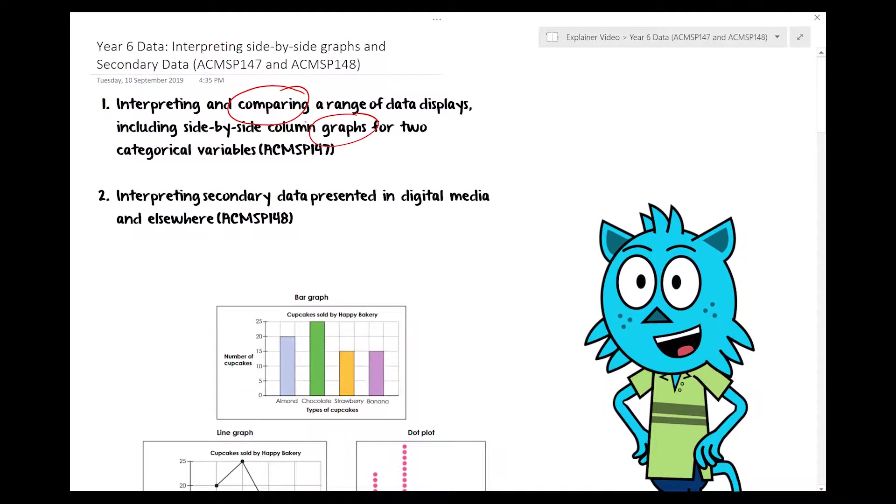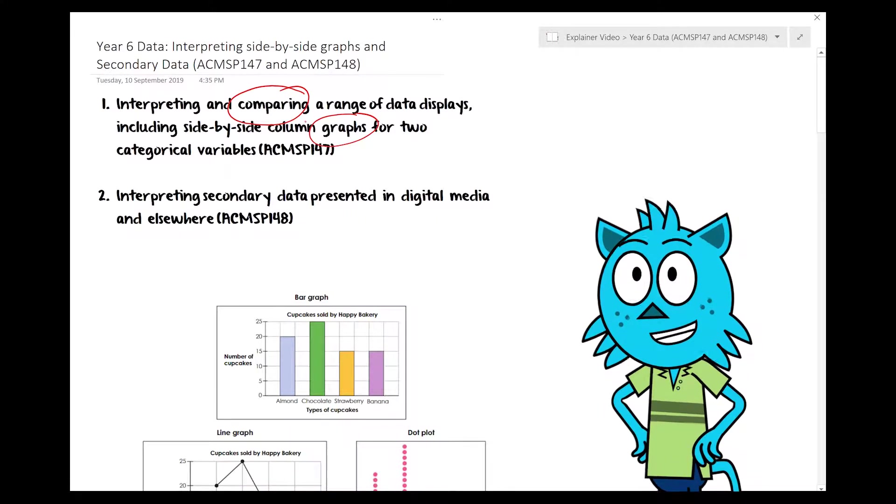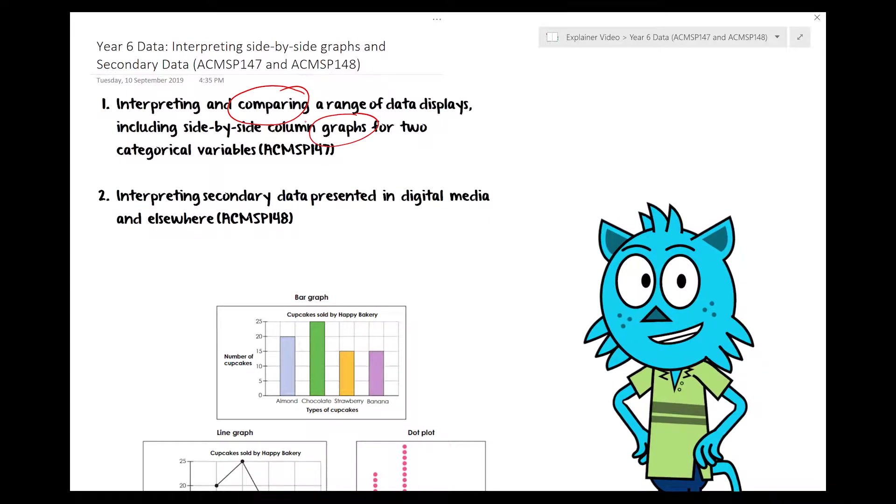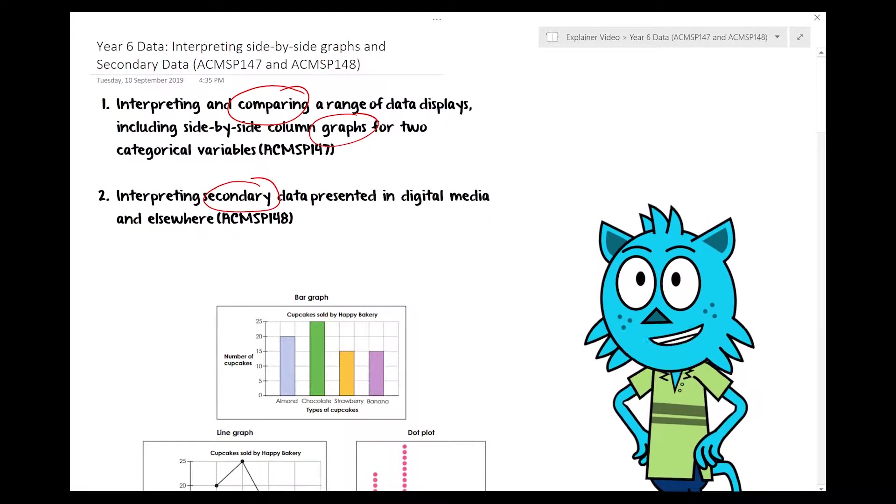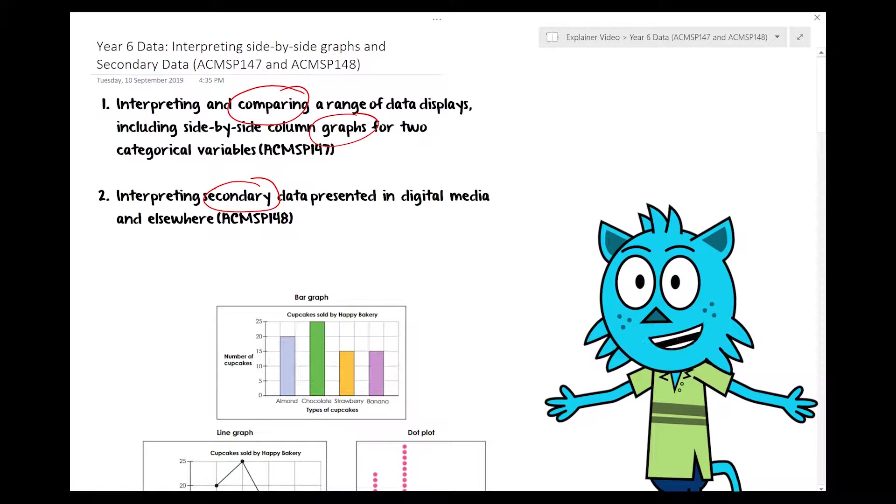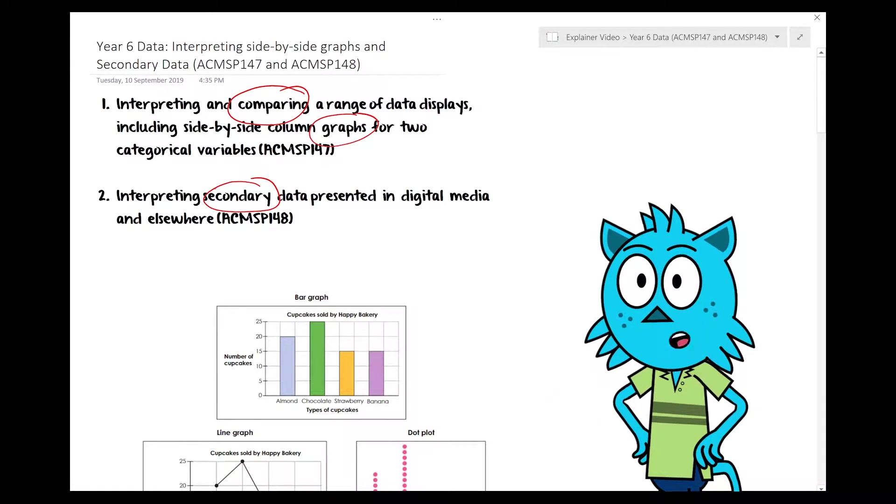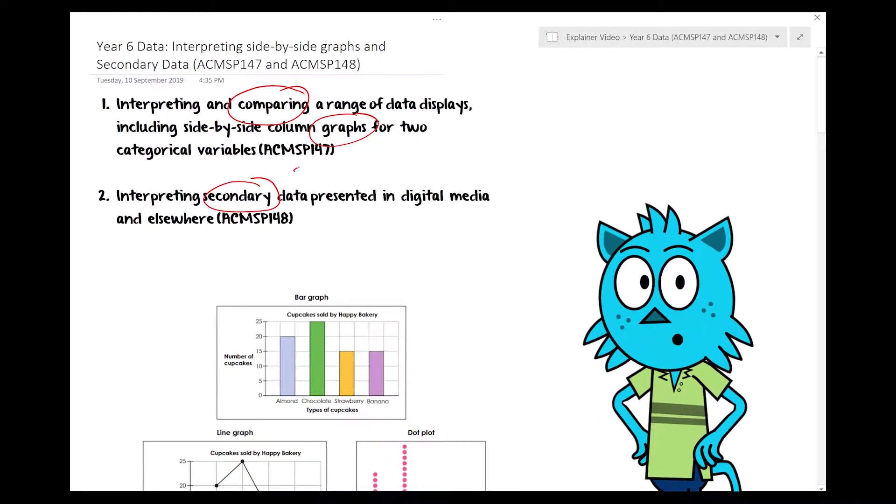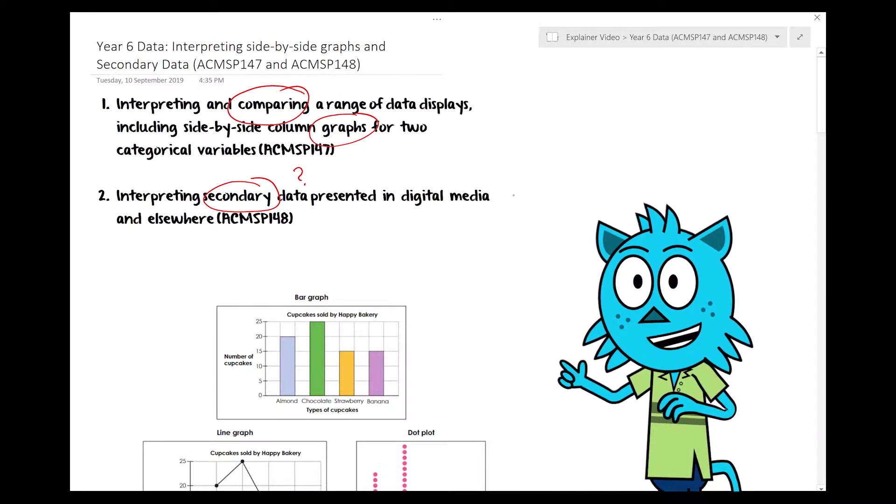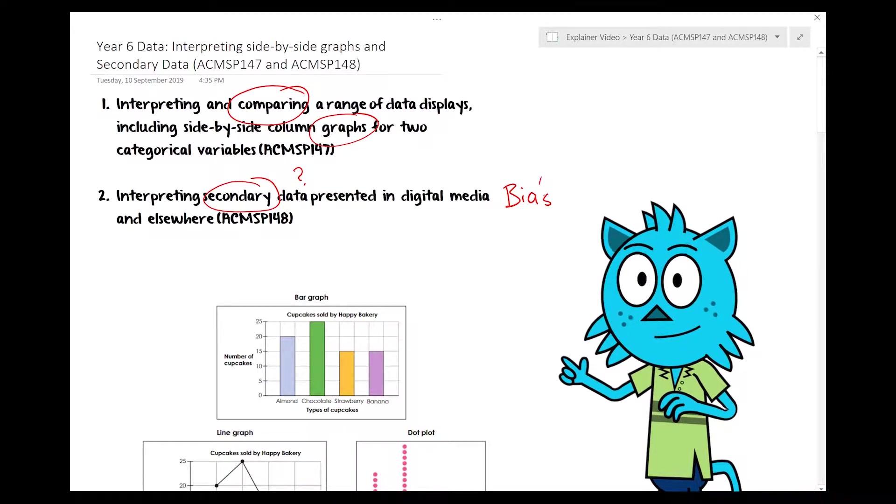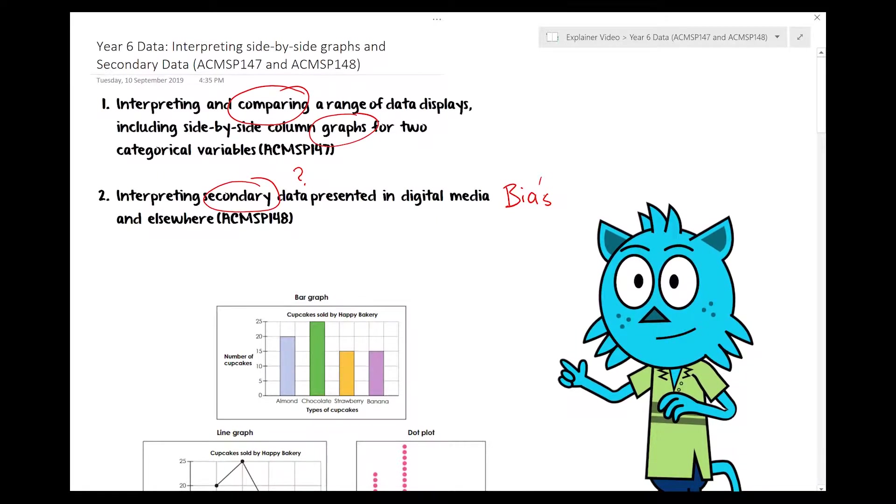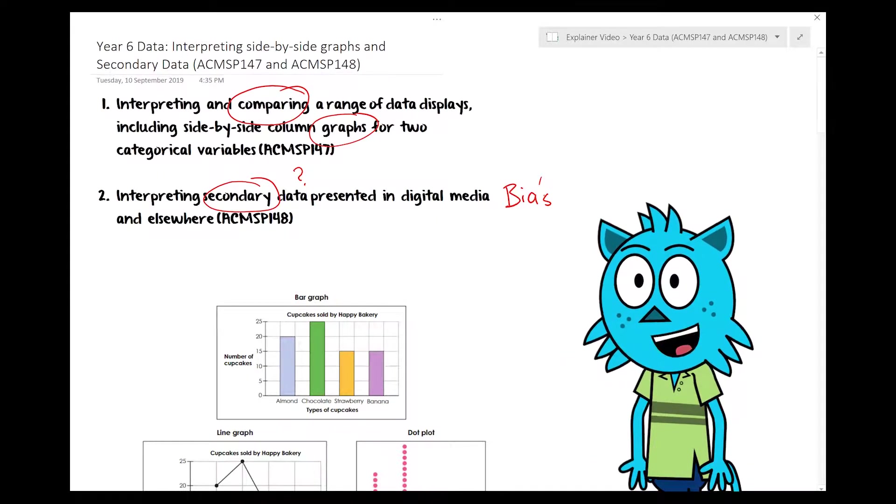The next learning intention we have is interpreting secondary data presented in digital media and elsewhere. So the main thing we're looking at there is what is secondary data and digital media. So we're actually looking at the bias. So how do newspapers and news channels on the TV, how do they use information and use the information with bias to show what they want it to show?